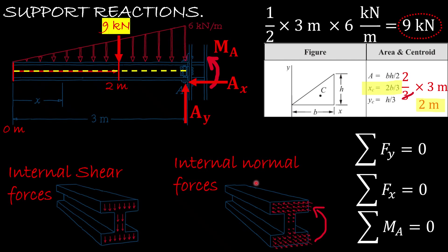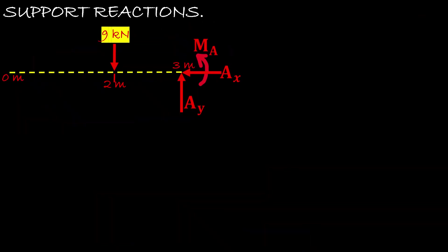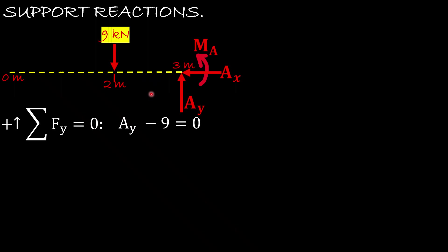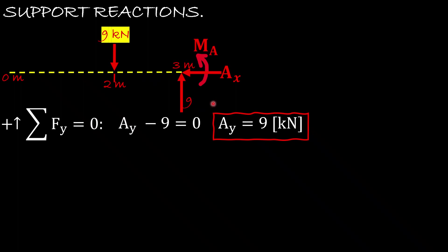We will use the static equilibrium equations to find the reaction forces and the internal shear force and internal net moment as functions of x. From the free body diagram, we sum forces in the vertical direction equal to zero: A sub y minus nine kilonewtons equals zero, so A sub y equals nine kilonewtons.